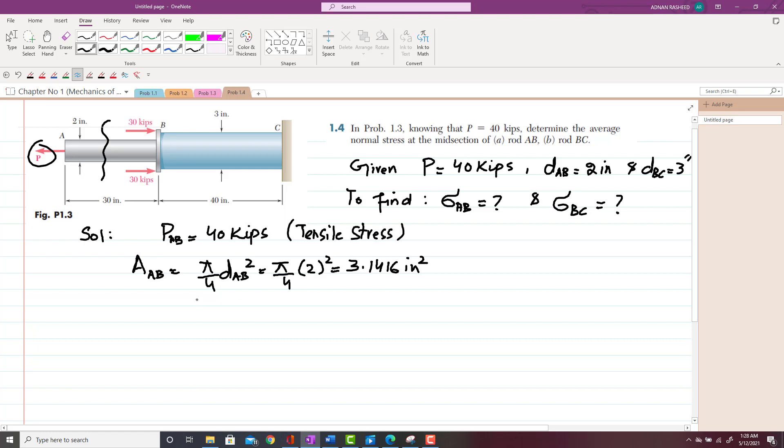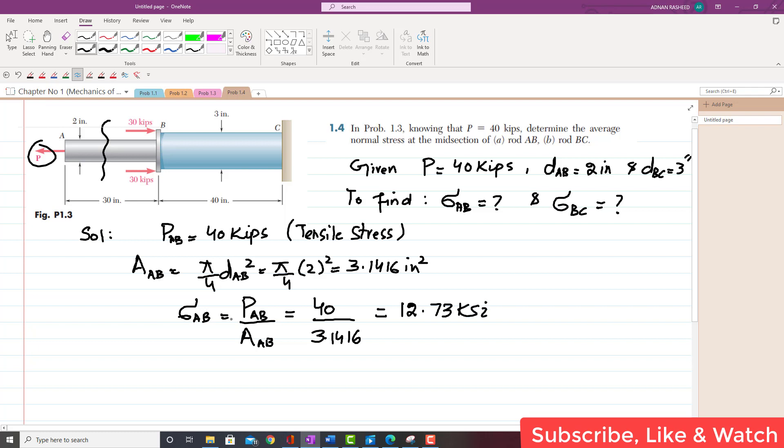So you have to find the tensile stress σAB, which is equal to PAB over area of section AB. Now this is 40 kips and this is 3.1416 in². And when you solve this, you will get 12.73 KSI.